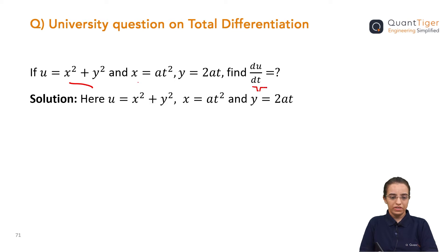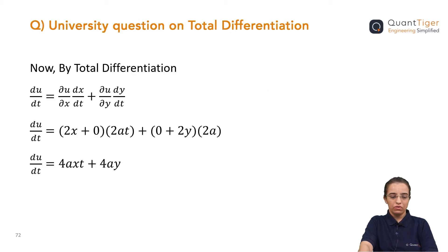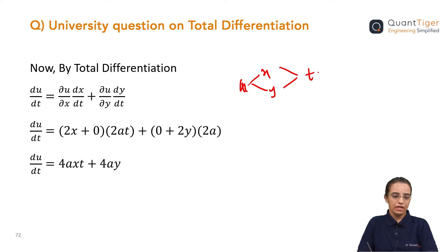So u is differentiated with respect to t, which is indirectly connected to it. In the solution, we start with u equal to x squared plus y squared, with the given values of x and y. By total differentiation, we can draw the diagram: u is a function of x and y, and x and y are functions of t again.